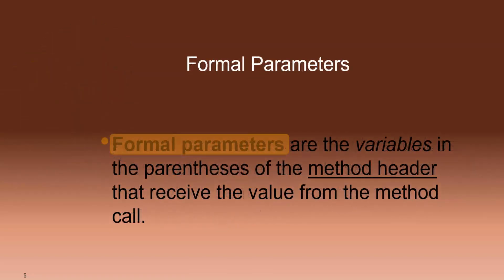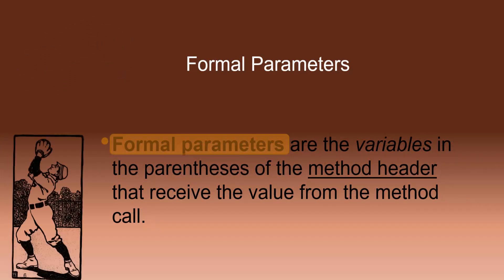The formal parameter is the variable located in the parameter list of the method header, and is the one that receives the information, like the person catching the ball.